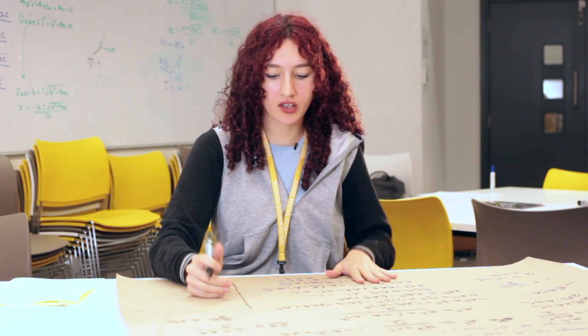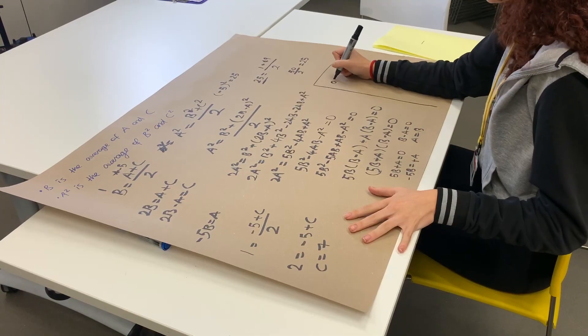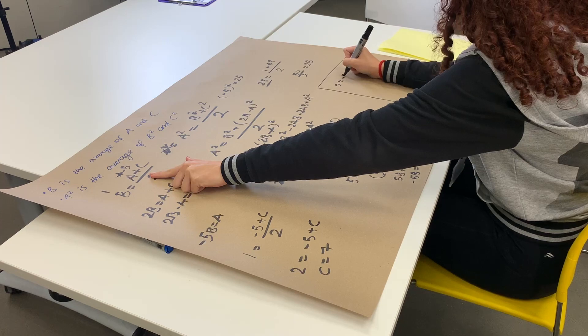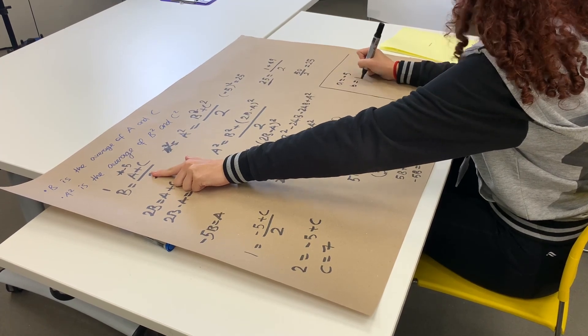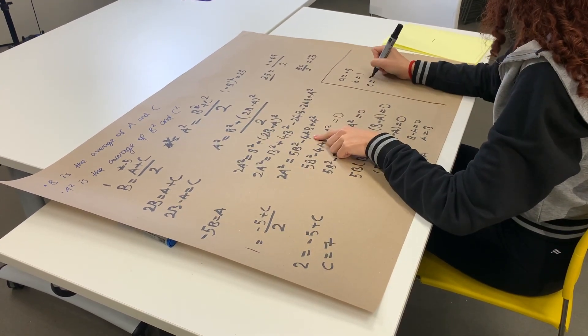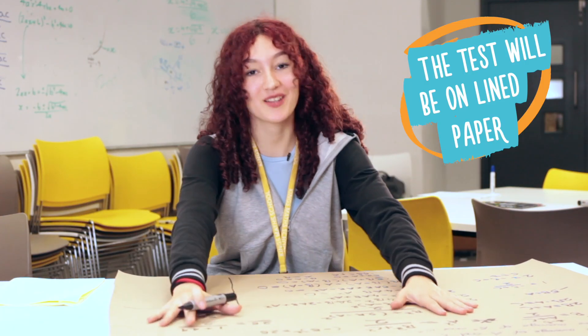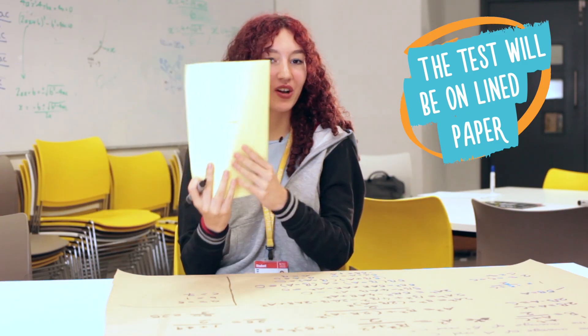So in summary, we've done our quadratic, we've done our equation and we concluded that A can be equal to minus five, B can be equal to one and C can be equal to seven. And don't forget when you're doing the test, you sadly will not have this big, nice paper. You will be doing it on actual lined paper.